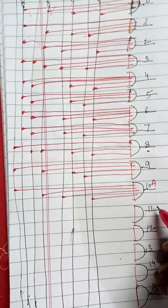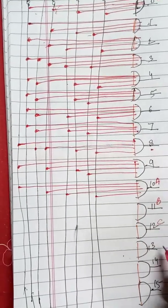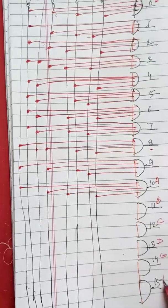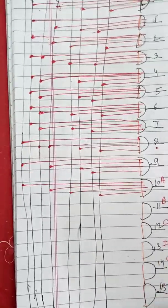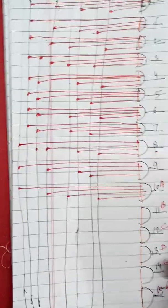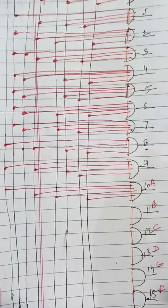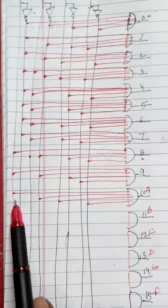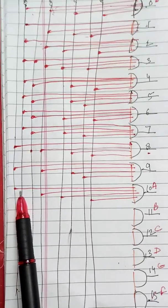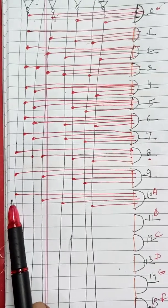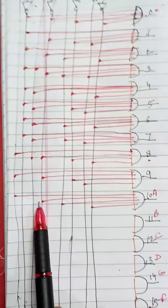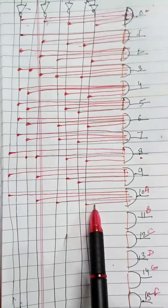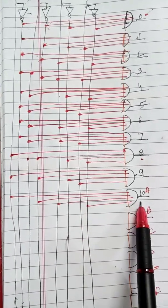Here you will be writing A, B, C, D, E, F instead of writing 10, 11, 12, 13, 14, and 15, as we are writing the hexadecimal numbers. If first input line is high, second is low, third is high, and fourth is low, then you will be getting A.